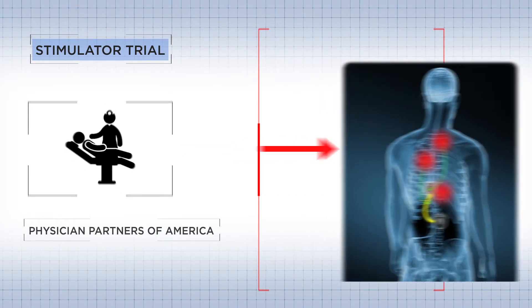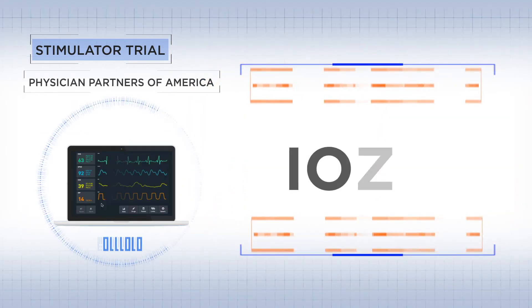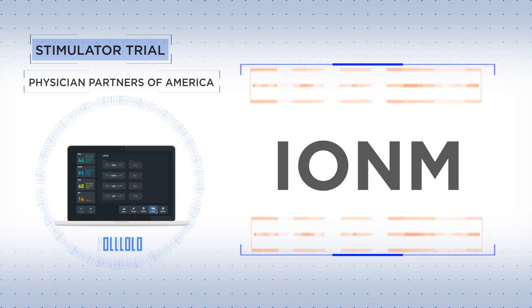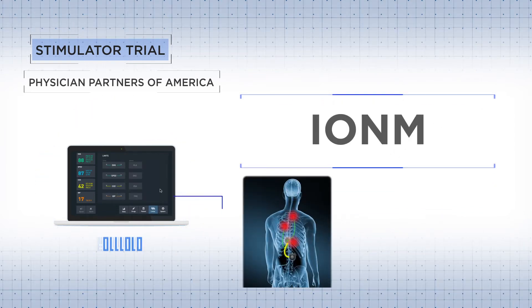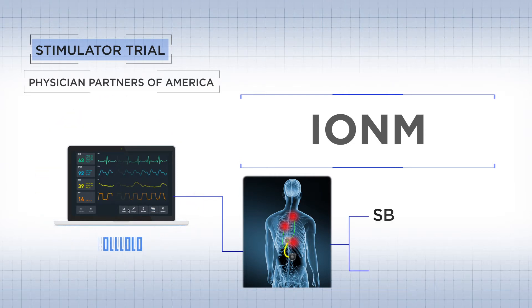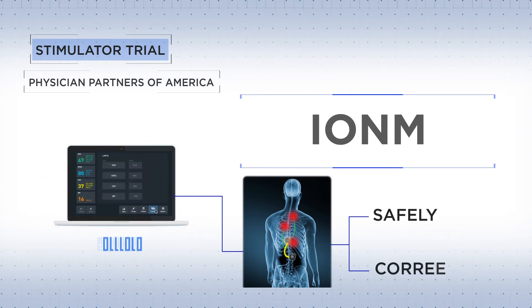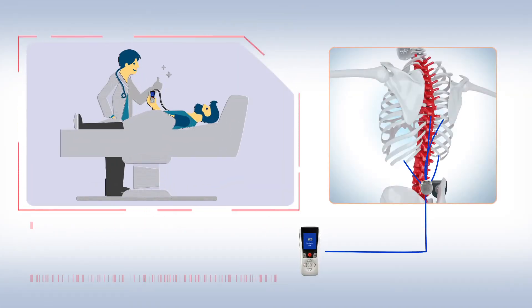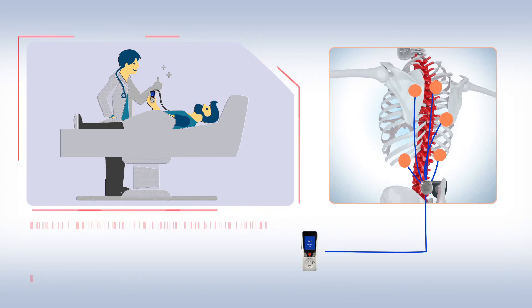Physician Partners of America takes even greater precautions using a device called an IONM. Monitored by a highly trained technician, it constantly monitors your nervous system during the procedure, making sure the implant is done safely and correctly. Afterward, you will rest comfortably and be shown how to adjust the controller.